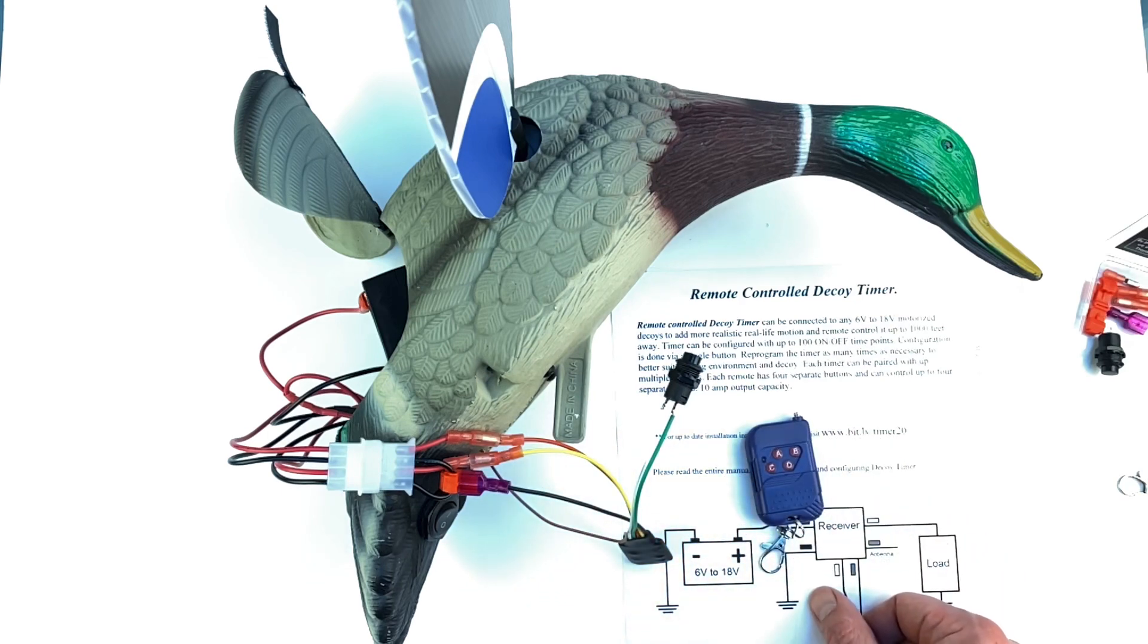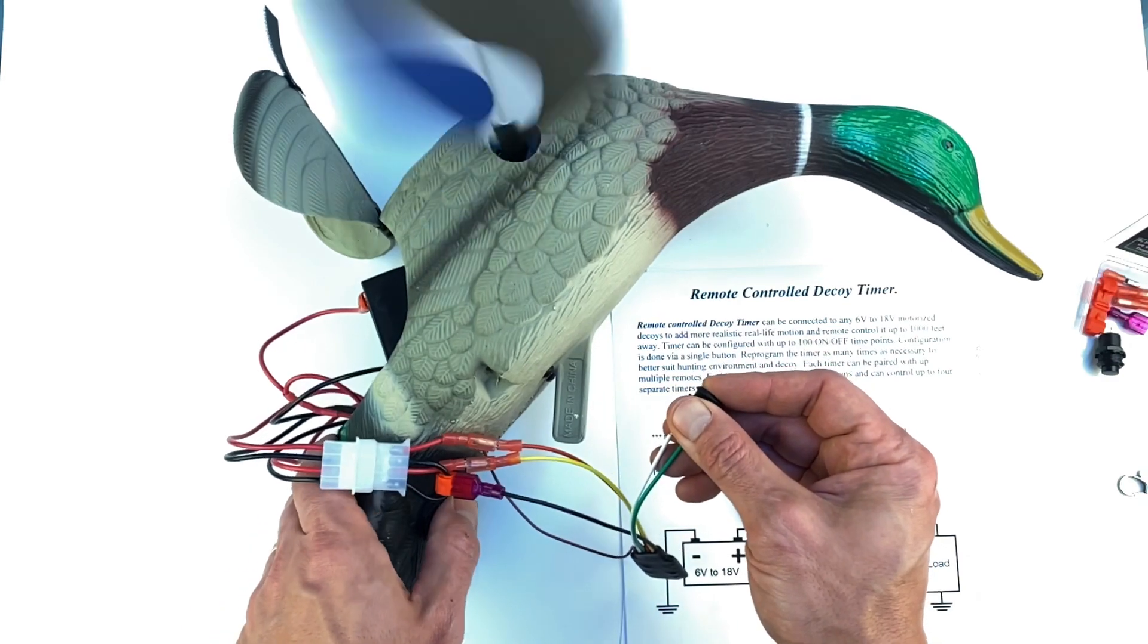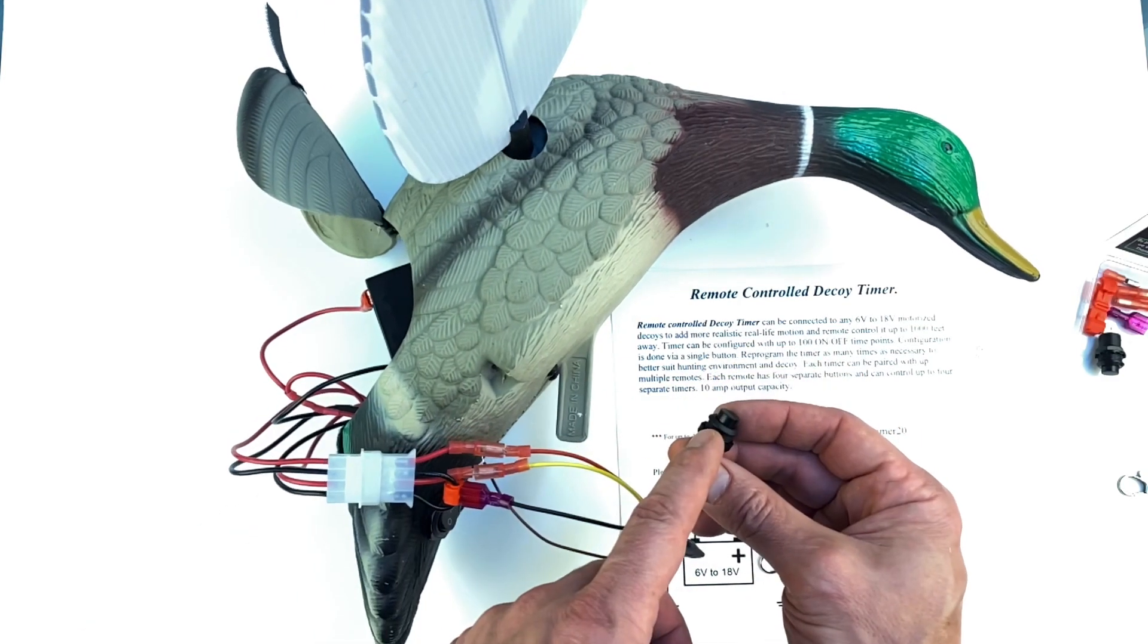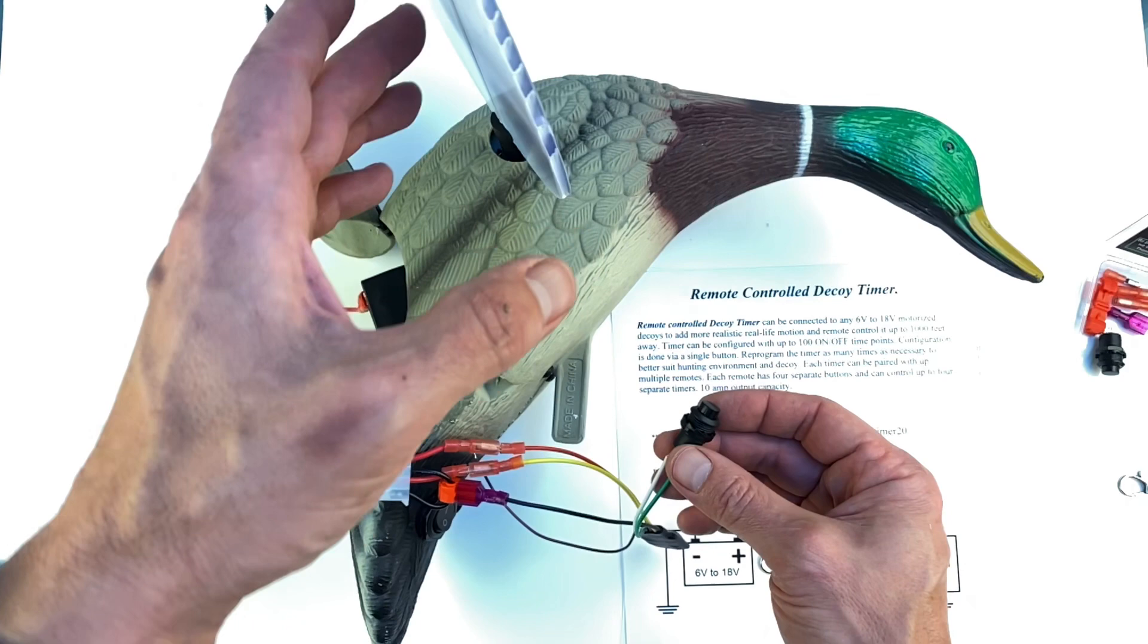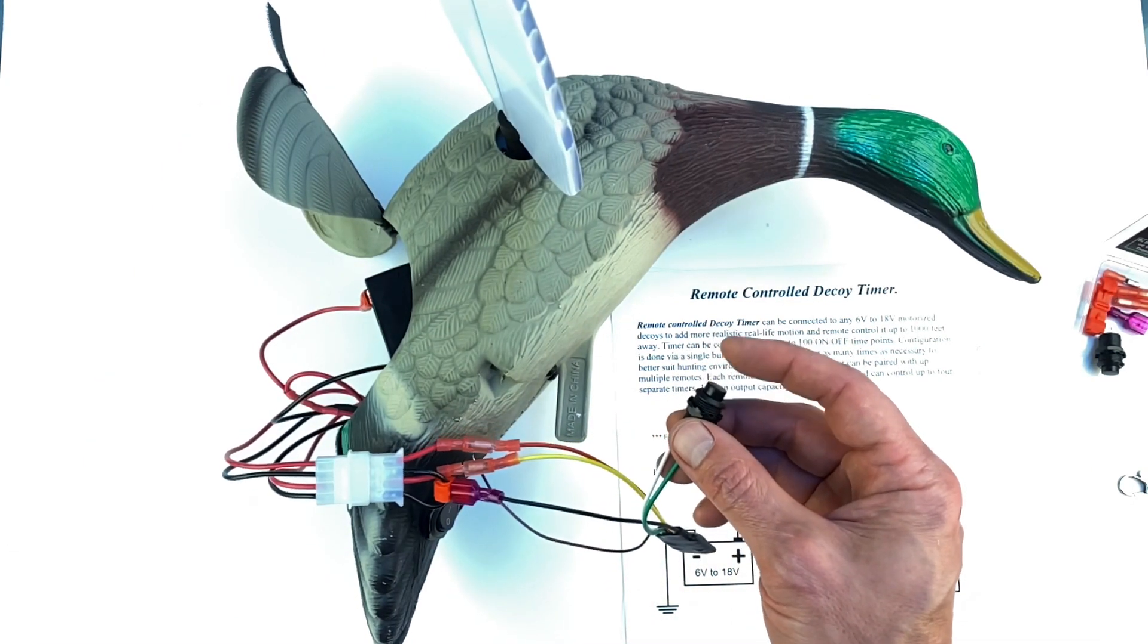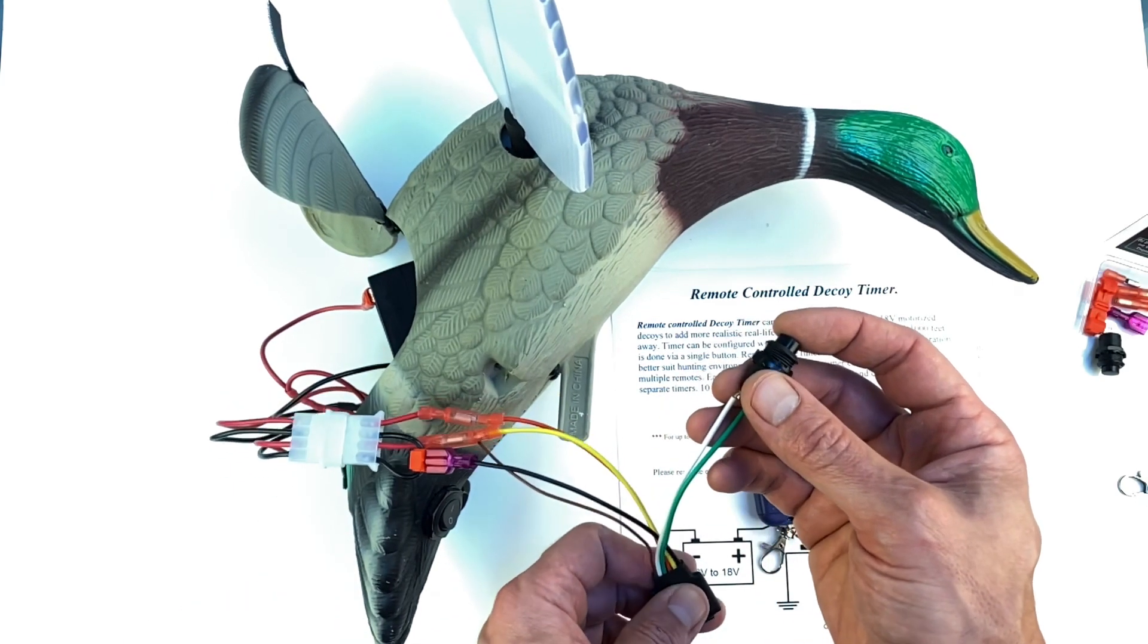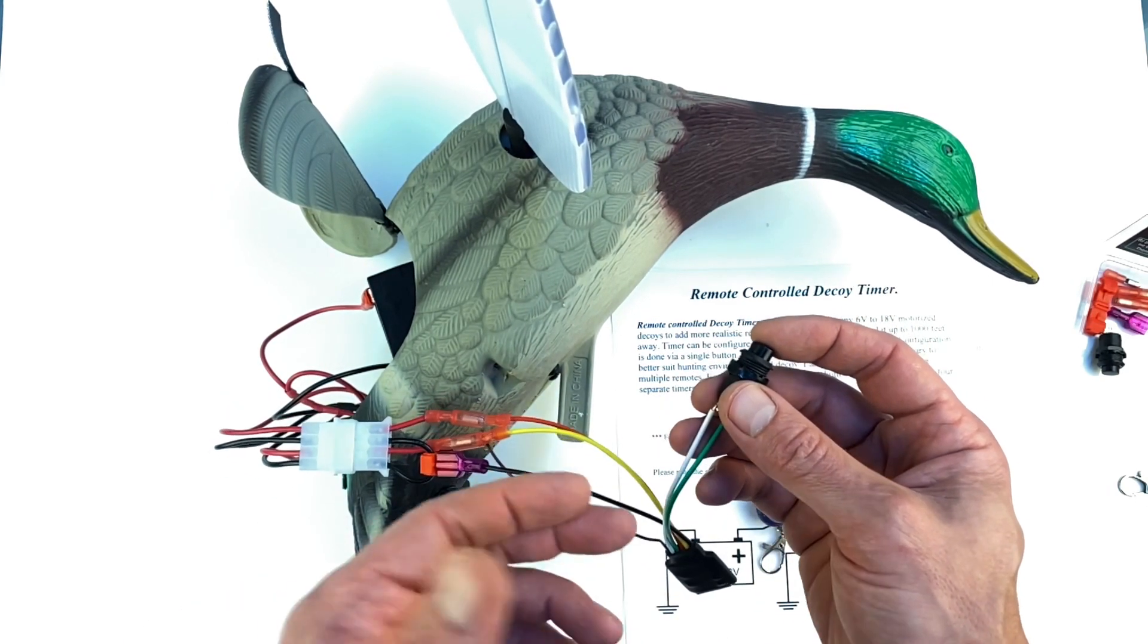Now to set up the motion sequence, we're going to push the button and turn the power on, and we're going to release the button after the first motion. Now when we push the button on and off, on and off, the timer is going to learn that sequence and remember it.